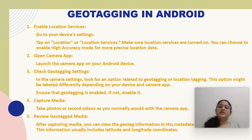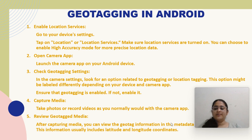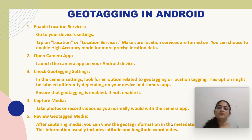Let us now see geotagging on an Android device. To enable geotagging on your Android device, go to your device's settings and tap on Location or Location Services. Make sure location services are turned on, and you can choose to enable high accuracy mode for more precise location data. Launch the camera app, and in the camera settings look for an option related to geotagging or location tagging. Ensure that geotagging is enabled. Take photos or record videos normally. After capturing the media, you can view the geotag information in the metadata, which usually includes latitude and longitude coordinates. You can view the metadata of an image or video file using forensic tools such as photoforensics.